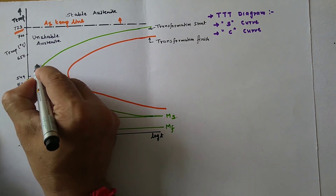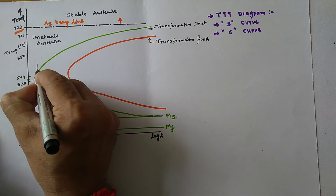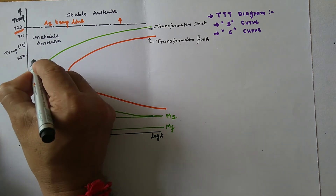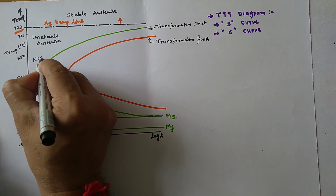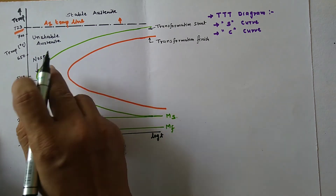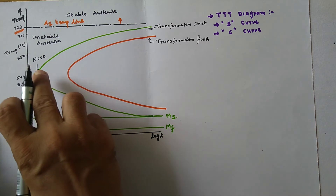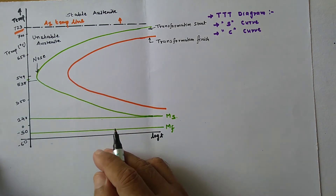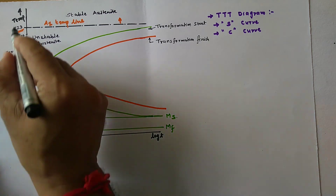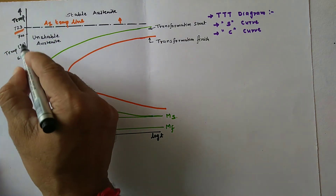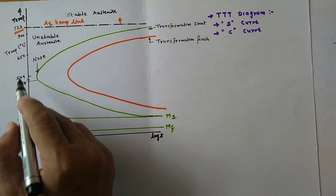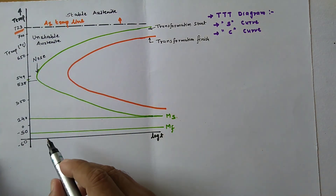This shape is known as the nose of the C-Curve. The horizontal axis is log T, and on the vertical axis, temperatures are represented.